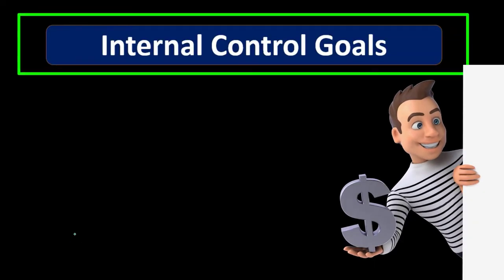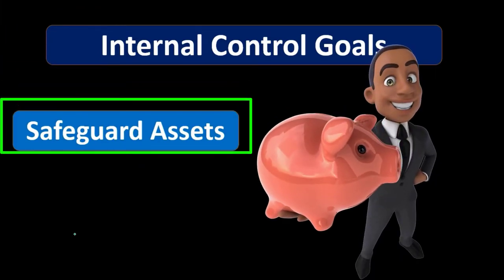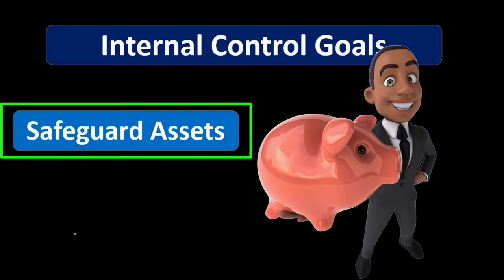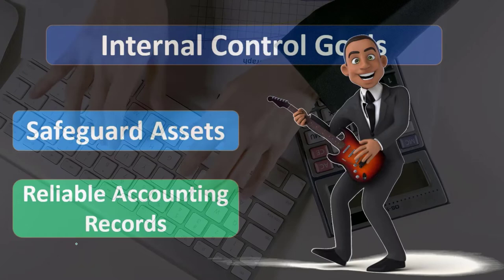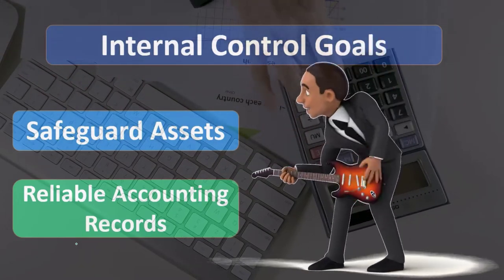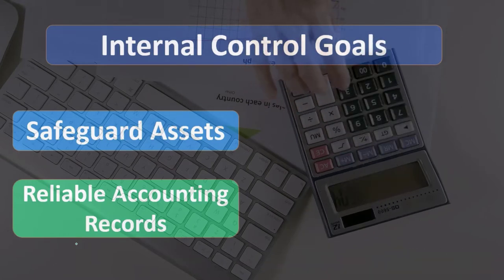The goals of internal controls include safeguarding of assets. We want to make sure we have policies in place — most obviously, locking up our assets, probably our cash, and restricting access to key individuals. When we implement internal controls, we want a definite knowledge of what goal we are going for with that specific control so that we can design it most effectively.